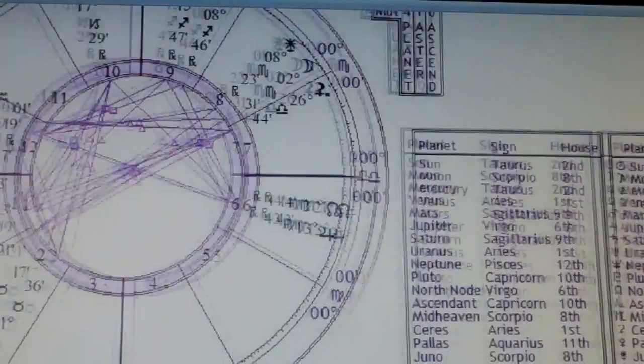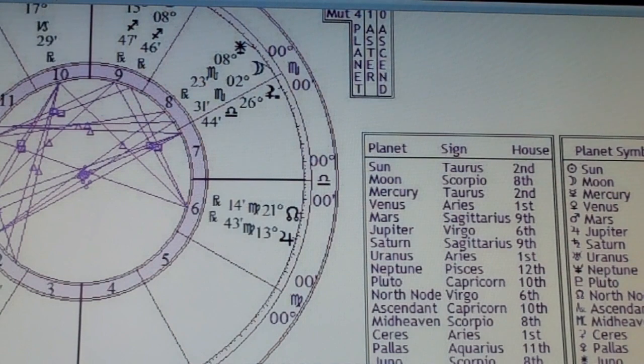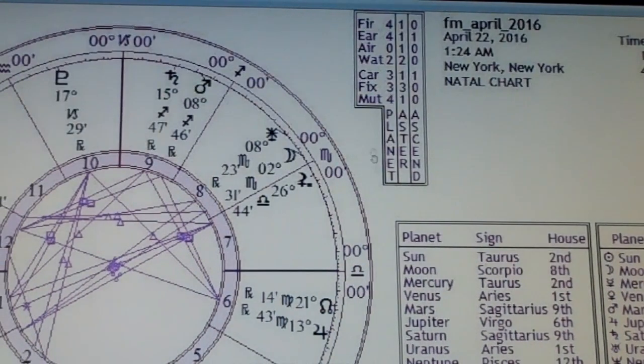What you do is go through and take all your planets. Here's all the planets, right? This does it for me, but how many are fire? How many are earth? How many are air? How many are water? That's step one. Then step two: how many are cardinal, how many are fixed, and how many are mutable?